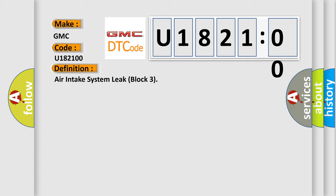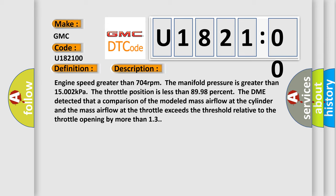And now this is a short description of this DTC code. Engine speed greater than 704 revolutions per minute. The manifold pressure is greater than 15,002 kilopascals. The throttle position is less than 8,998 percent. The DME detected that a comparison of the modeled mass airflow at the cylinder and the mass airflow at the throttle exceeds the threshold relative to the throttle opening by more than 13.